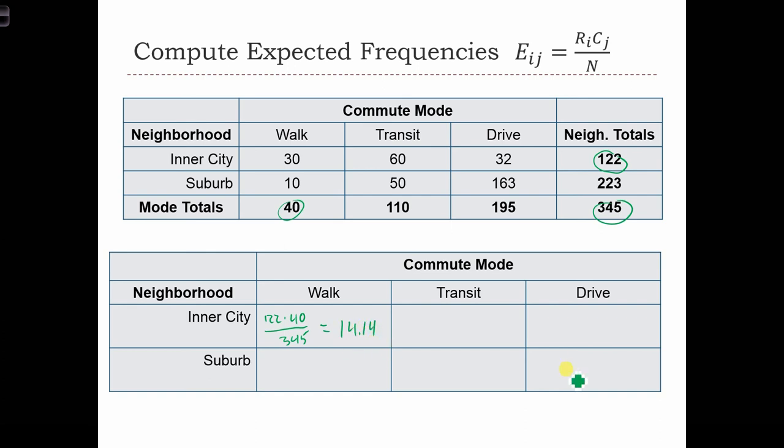Let's fill out this box over here. We've got row 2 and column 3. So we've got 223 times 195 over 345.